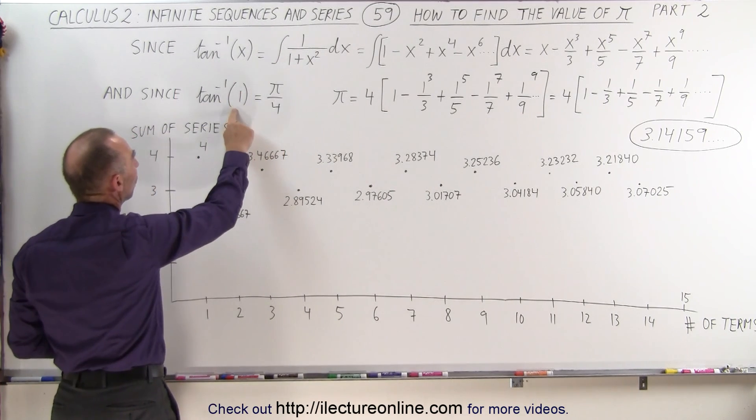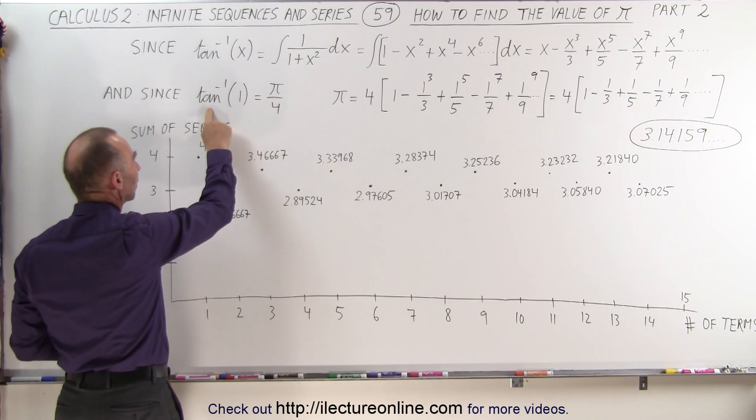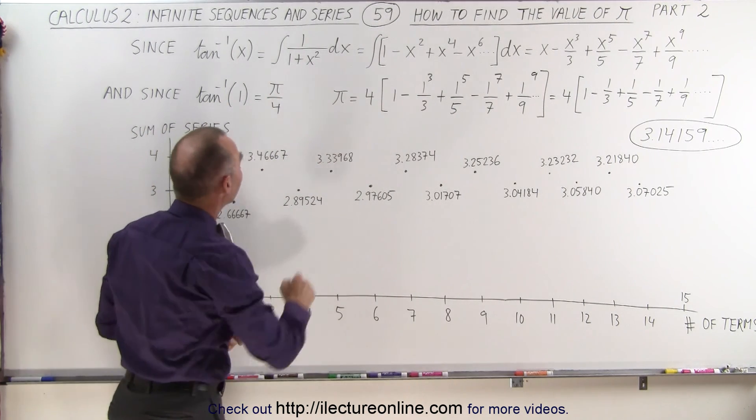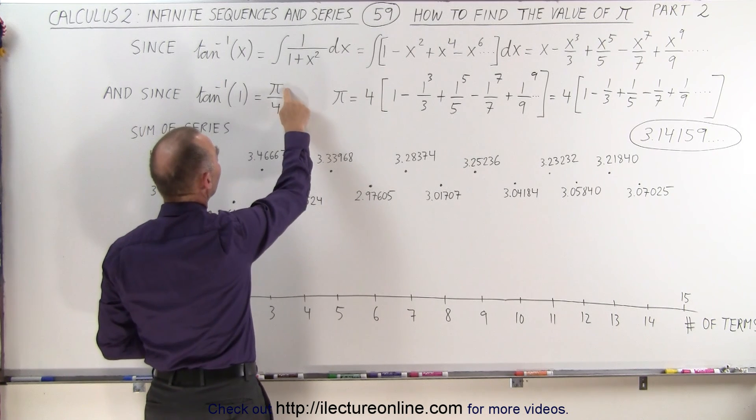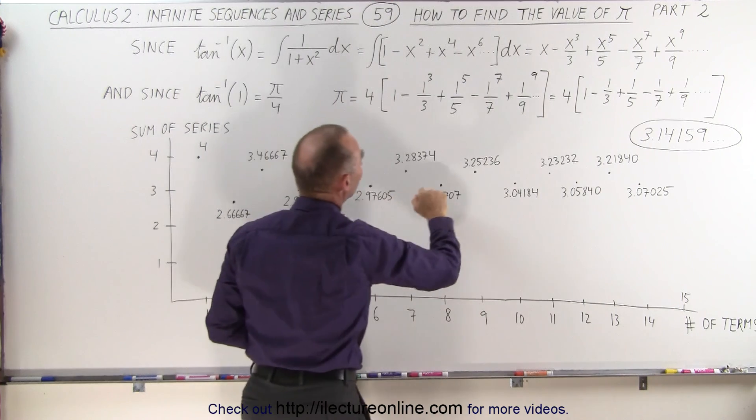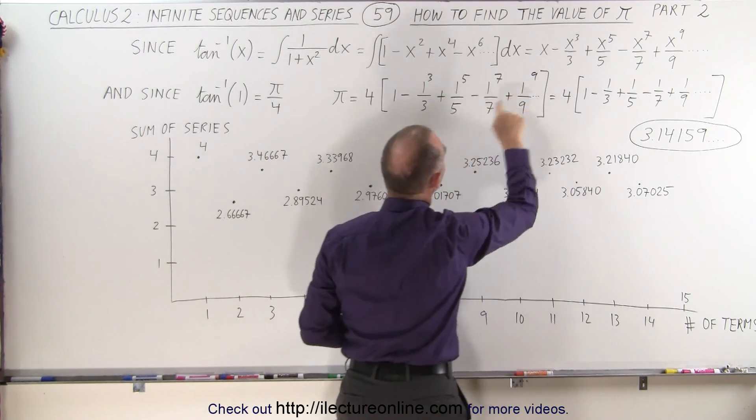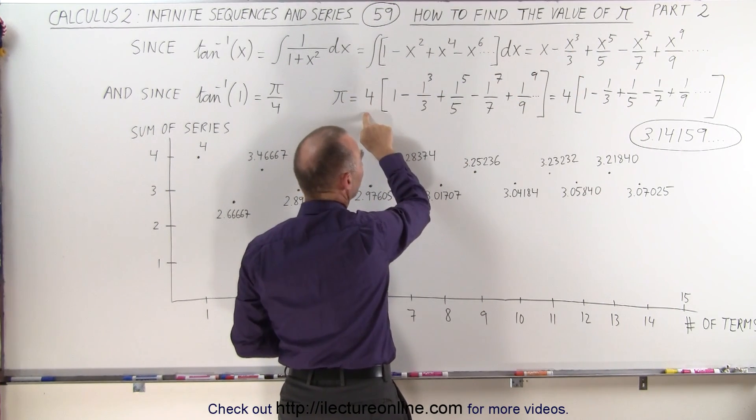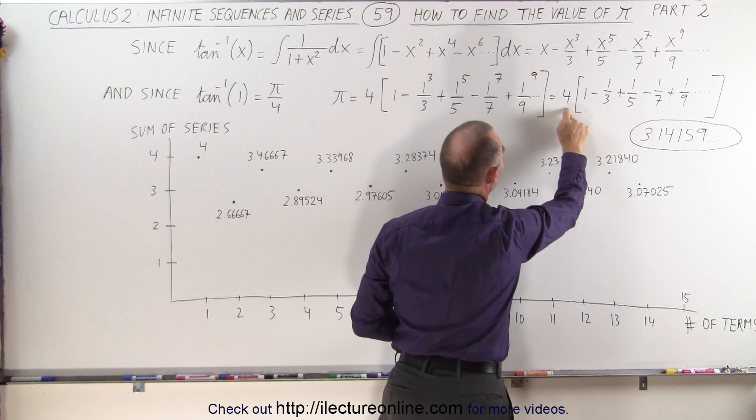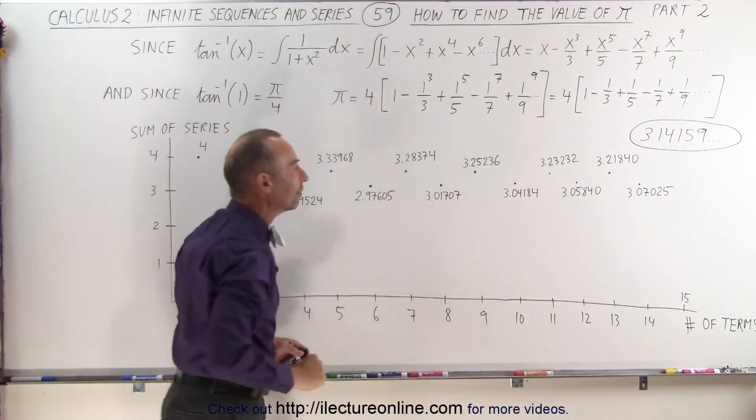If we then let x go to 1, we know that the arctangent of 1 is equal to 45 degrees or pi over 4, and from that we can say that pi is equal to 4 times the arctangent of 1. So all we have to do is replace every x by 1, multiply this by 4, and the infinite series times 4 will give you the value of pi.